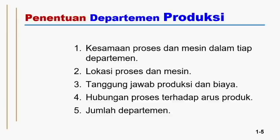Penentuan departemen produksi dapat dilakukan berdasarkan beberapa hal: pertama, kesamaan proses dan kesamaan mesin dalam tiap departemen; kedua, lokasi proses dan lokasi mesin; ketiga, tanggung jawab produksi dan tanggung jawab biaya; keempat, hubungan proses terhadap arus produk; dan kelima, jumlah departemen itu sendiri. Inilah hal-hal yang menentukan departemen produksi yang dilakukan oleh suatu perusahaan.